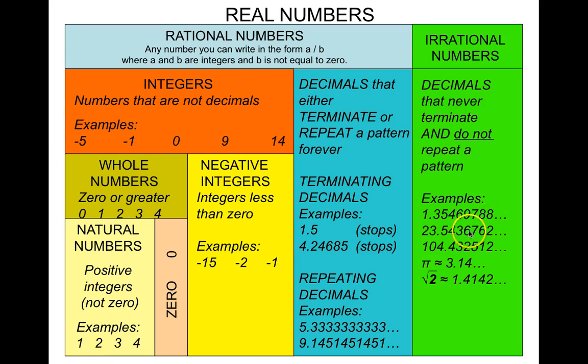One of the most famous irrational numbers is pi. It's often written as 3.14, but that's really just an estimate — it actually goes on forever and never repeats a pattern. So pi is an irrational number. Some square roots are irrational as well. The square root of 2, for example, is 1.4142... — it never ends and never repeats a pattern.